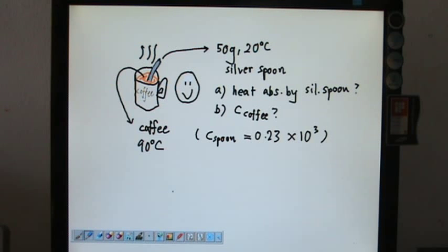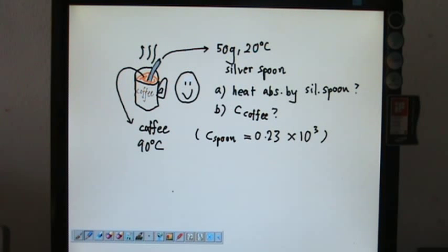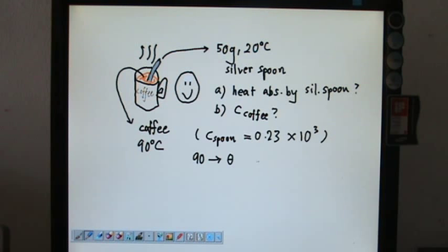We have another sample question. This one is a cup of coffee with a silver spoon put into the coffee, and the spoon is used to stir the coffee. The silver spoon is 50 grams and initially at 20 degrees Celsius. The specific heat capacity of the spoon is 0.23 times 10 to the power 3. The coffee is at 90 degrees Celsius, and by putting the silver spoon into the coffee, there could be some final temperature when they reach thermal equilibrium — meaning 90 degrees could change to theta, and 20 could change to theta as well.